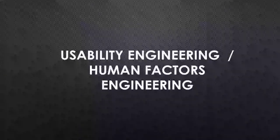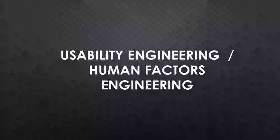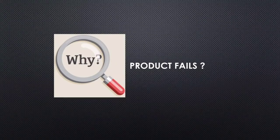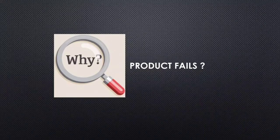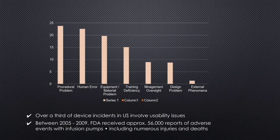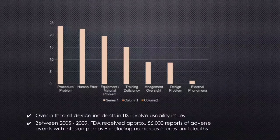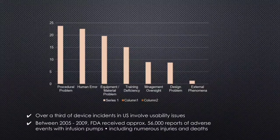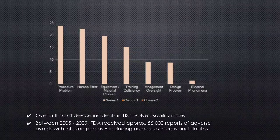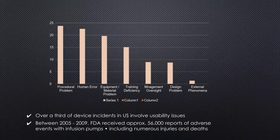In this video we are going to discuss usability engineering or human factors engineering. Before that, we are going to discuss why products fail in the market. Products fail not only due to design error, material error, manufacturing process error, transportation, storage error, or training deficiency — the maximum amount of product failures happens due to human error.